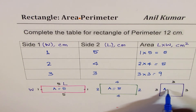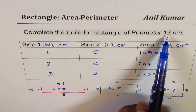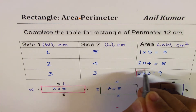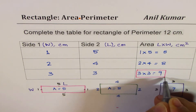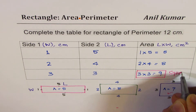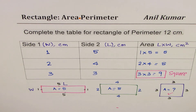What you notice here is that for the same perimeter of 12, we could have different areas. So which area is maximum? The maximum area is for the square — 3 by 3 — giving 9 centimeters squared. A square gives you the maximum area for the same perimeter. That's a very important learning.